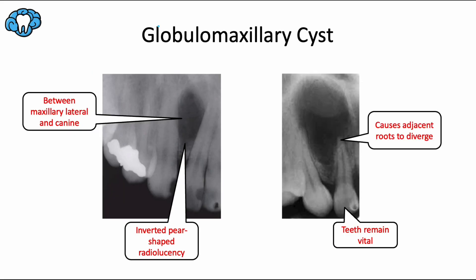Many scholars regard this last fissural cyst as a myth rather than a true diagnosis, but we're going to learn about it because it can appear on your board exam. The globulomaxillary cyst appears between a maxillary lateral incisor and the adjacent canine — a very specific location. It presents as an inverted pear-shaped radiolucency on radiographs, and often causes the roots of adjacent teeth to diverge. Unlike periapical radiolucencies such as the radicular cyst, these teeth usually remain vital. It arises at the junction between the maxilla and the premaxilla.